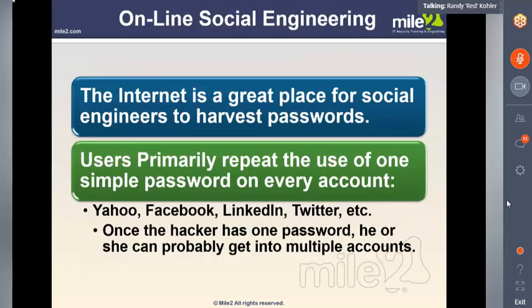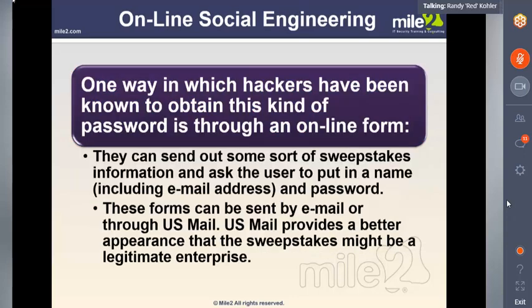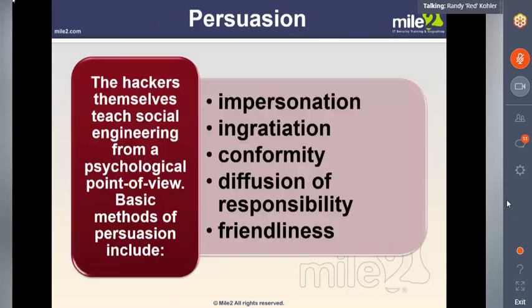Online social engineering uses social networking sites like Facebook, Yahoo, and Twitter to gain information. We can also send you an email, have you reset your password, and next thing you know we're logged in as you because you gave us your username and password. It's called phishing attacks — going through online forms sent by email or U.S. mail. A sweepstake type of scenario could also be used. Persuasion goes all the way down to impersonation — you can put on a different voice and accent — as long as you've got the lingo of the organization, you can integrate yourself using conformity, diffusion of responsibility, and friendliness.